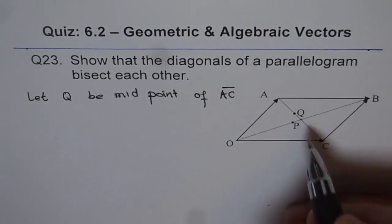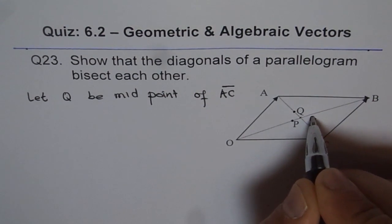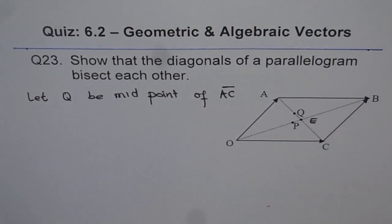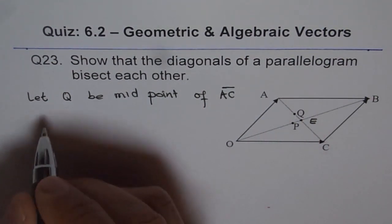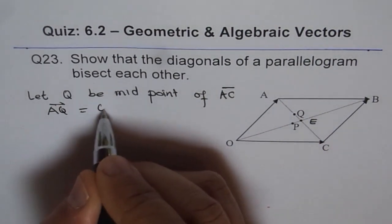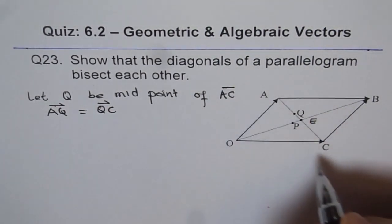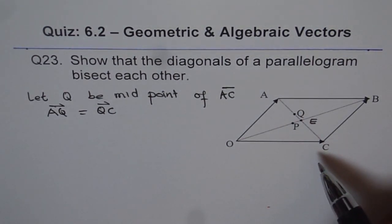That means they are bisecting at a point — let me call this point E. We are saying E is different from the midpoint of the diagonals. So let Q be the midpoint of AC. In that case, AQ equals QC. The direction is the same and when we say Q is the midpoint, their magnitude is also the same.